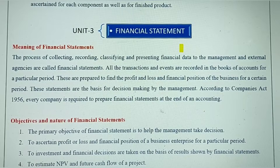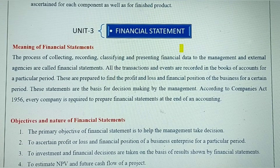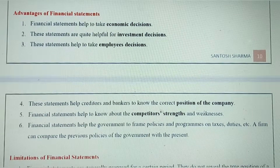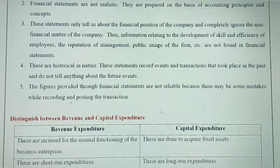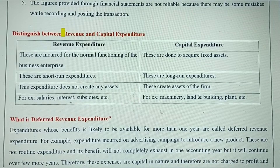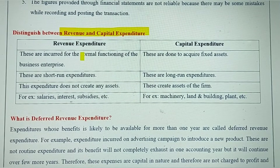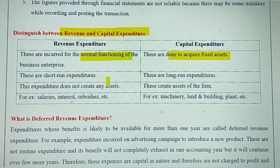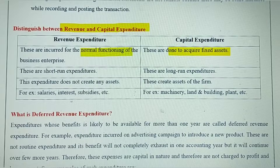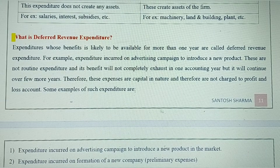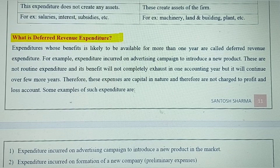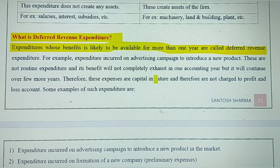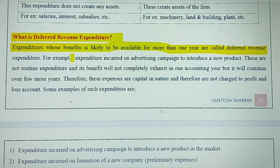Unit 3 covers financial statements. Financial statements are not a new concept — we know about trading, profit and loss, and balance sheet. The main objective is to find out the profit and loss and financial position of the company. Advantages and limitations of financial statements are very important and frequently asked in exams. One key difference from this unit is between revenue expenditure and capital expenditure: revenue expenditure is incurred for normal functioning of the company, whereas capital expenditure is done to acquire fixed assets. Revenue expenditure is generally a smaller amount; capital expenditure is a larger amount for the long run.